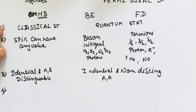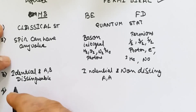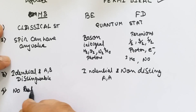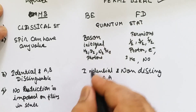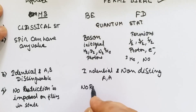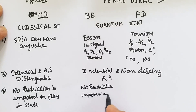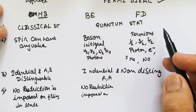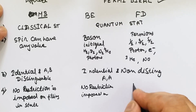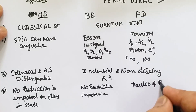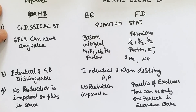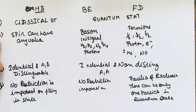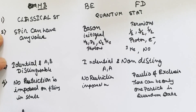The fourth point: in Maxwell-Boltzmann statistics, no restriction is imposed on filling particles in different states. In Bose-Einstein statistics, there is also no restriction on filling of particles. However, particles which obey Fermi-Dirac statistics follow Pauli's exclusion principle — there can be only one particle in a particular quantum state.